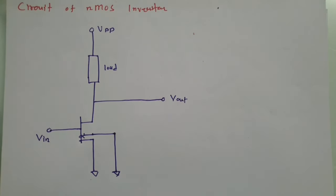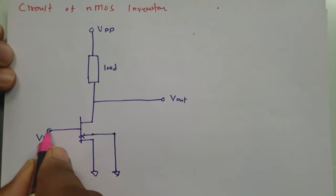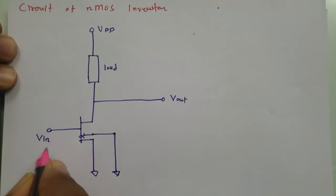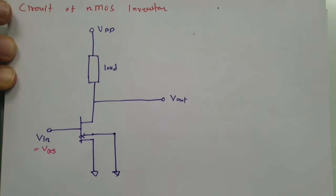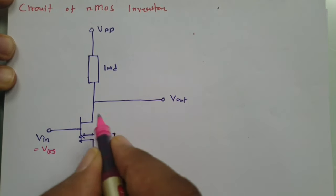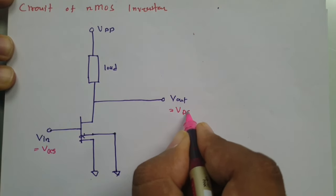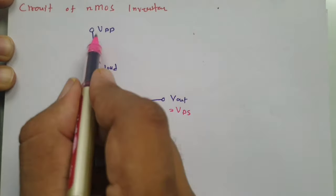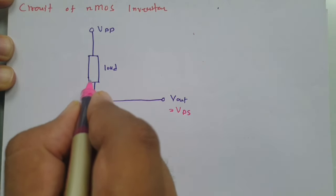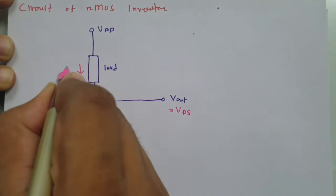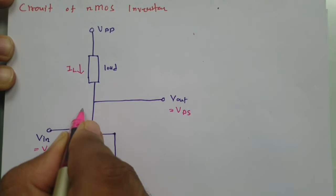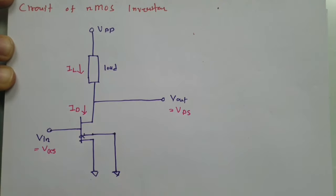This is the NMOS inverter circuit. If you observe, the gate terminal input is Vgs since source is grounded, and output taken from drain with source grounded is Vds. VDD is at the top, current IL flows through the load, and current ID flows through the drain terminal.